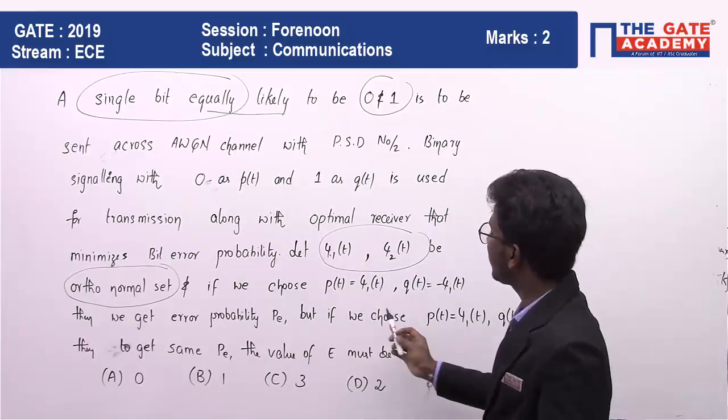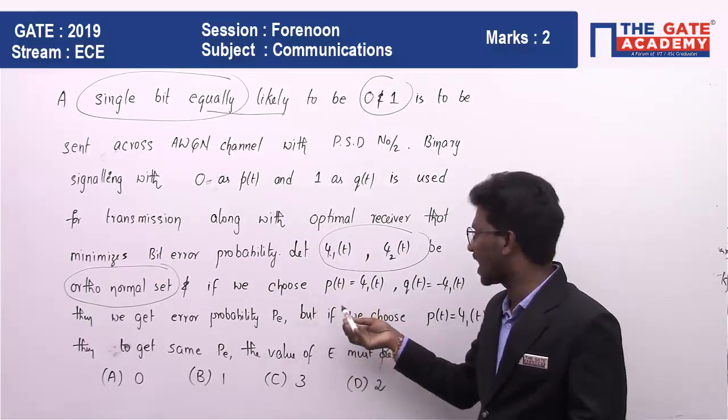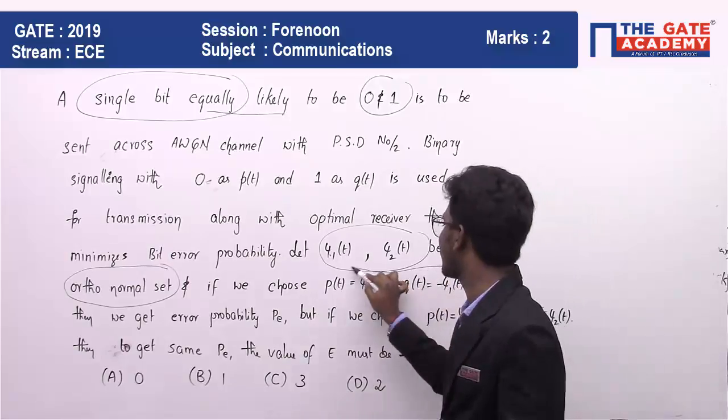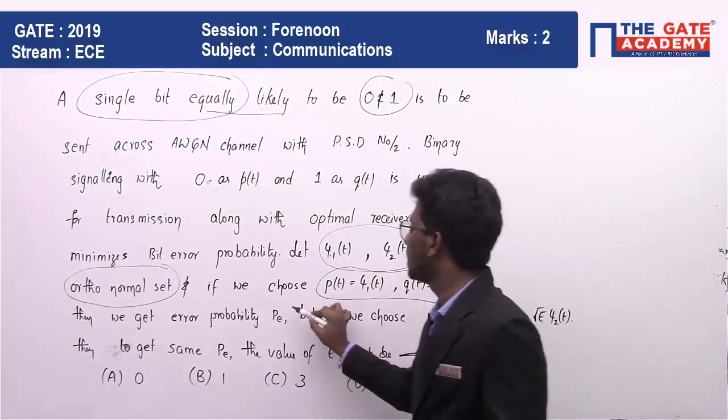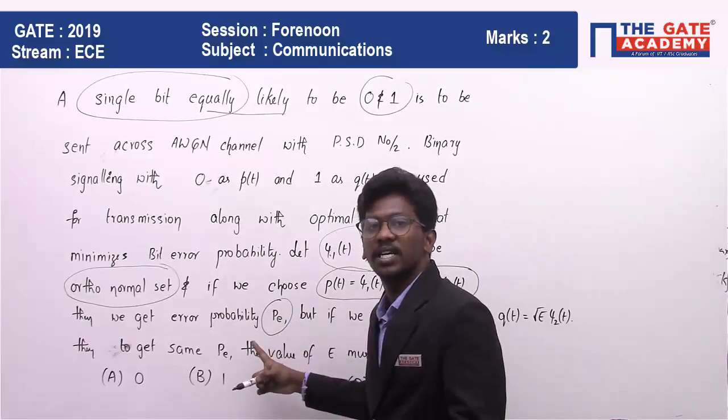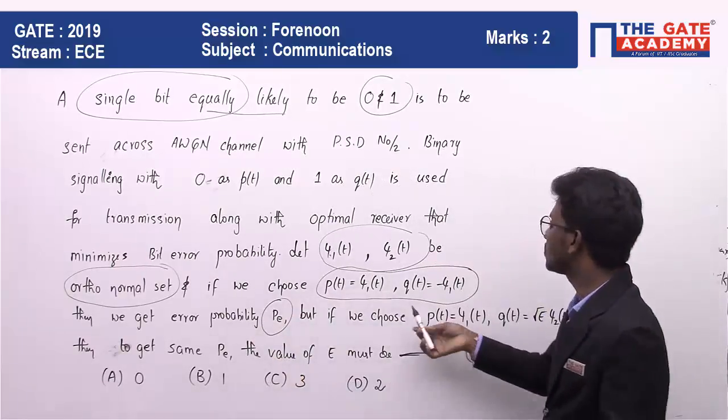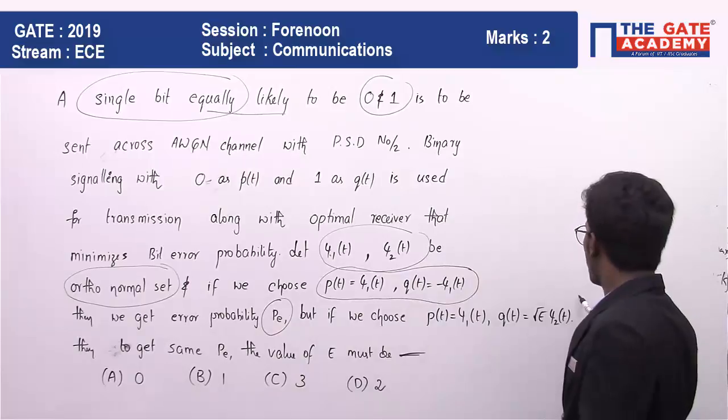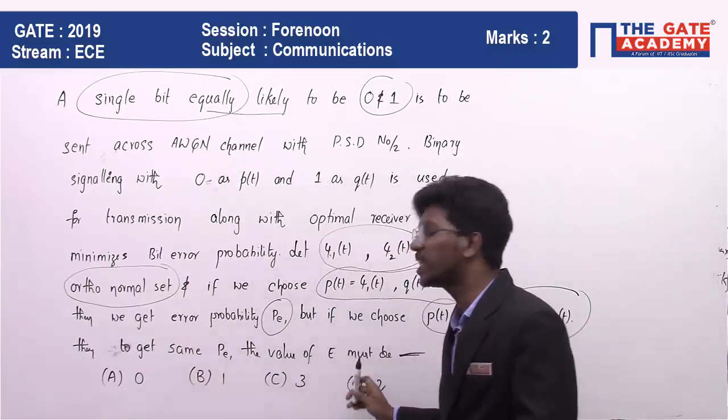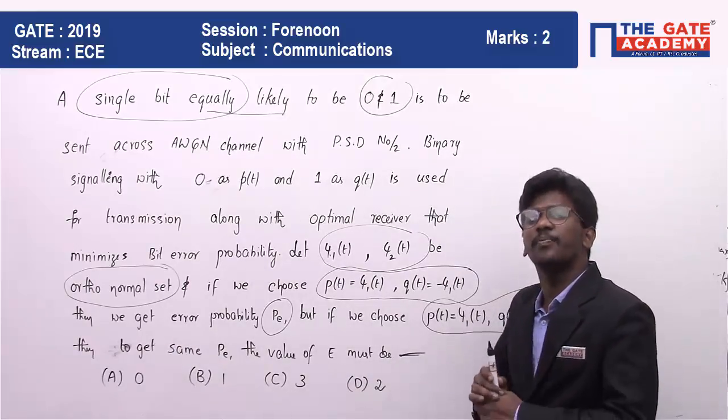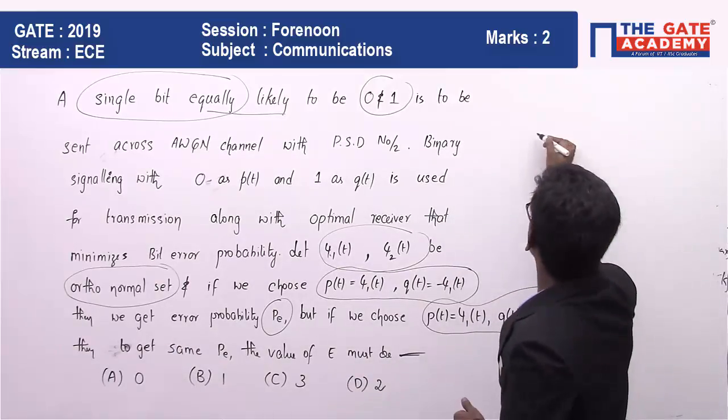In the first case, if P(t) is ψ1(t) and Q(t) is -ψ1(t), we get probability Pₓₑ. Now he is asking, if coding is done in a different way, what must be the value of E to get the same probability of error? The simple approach is to use the constellation diagram.